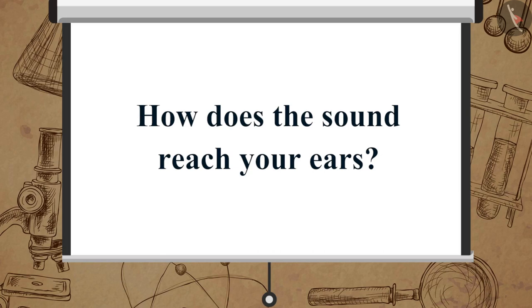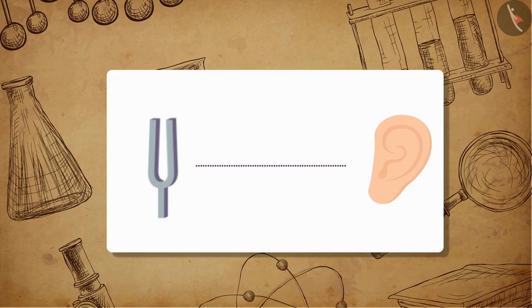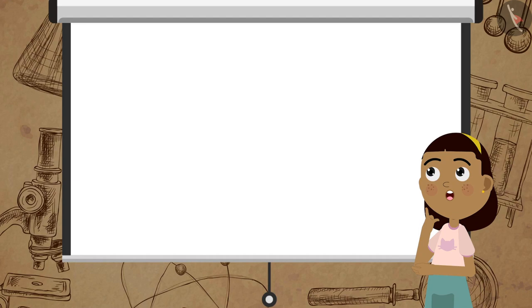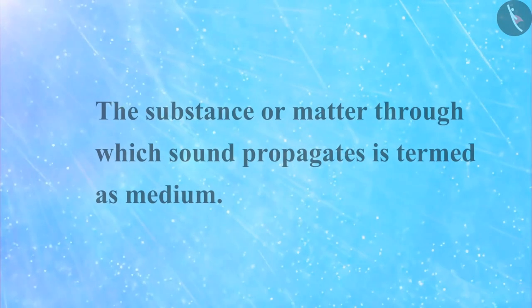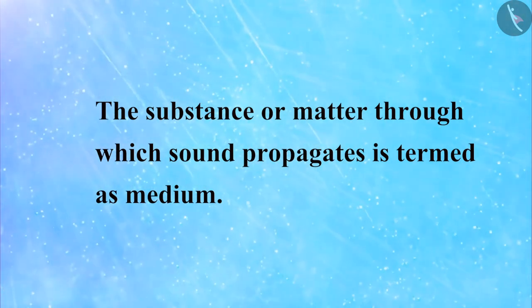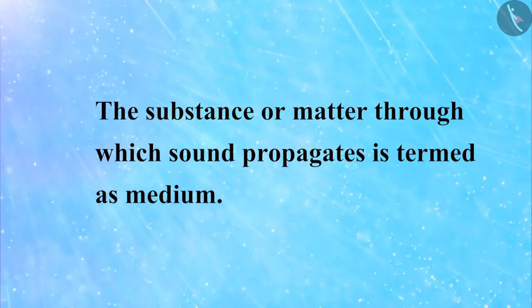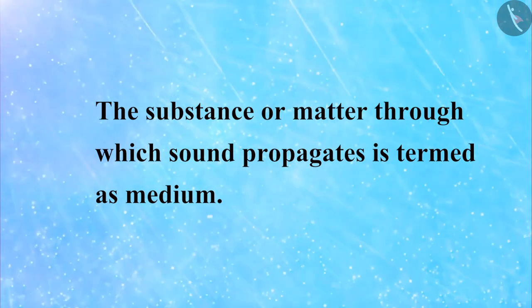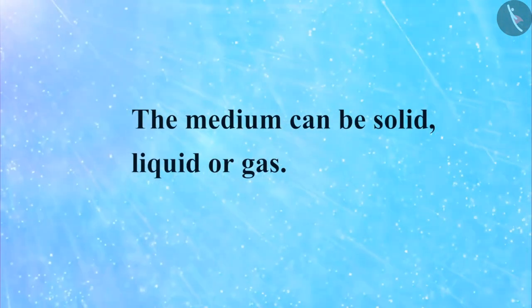You will notice that the band vibrates and produces a sound. But how does the sound reach your ears? Sound travels from the point of its origin to the receiving end, and to do so it needs a medium to travel. The substance or matter through which sound propagates is termed as medium. The medium can be solid, liquid or gas.